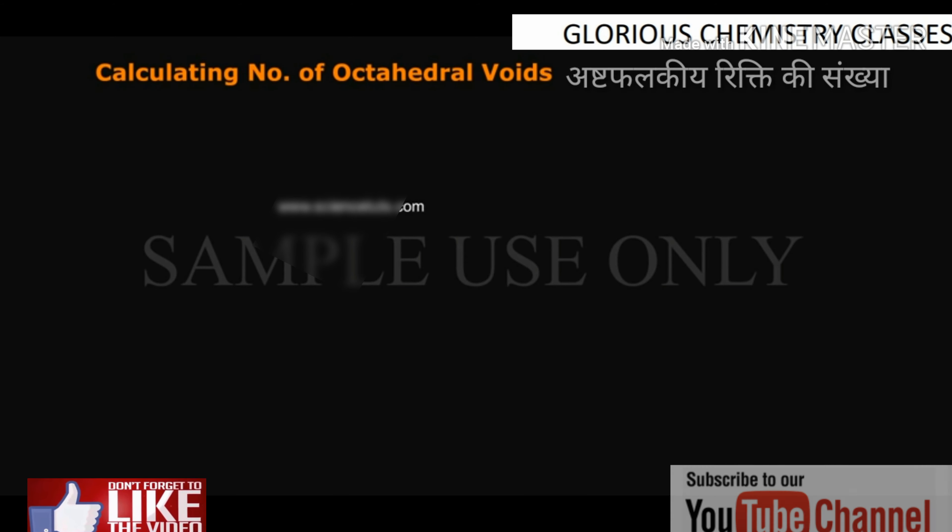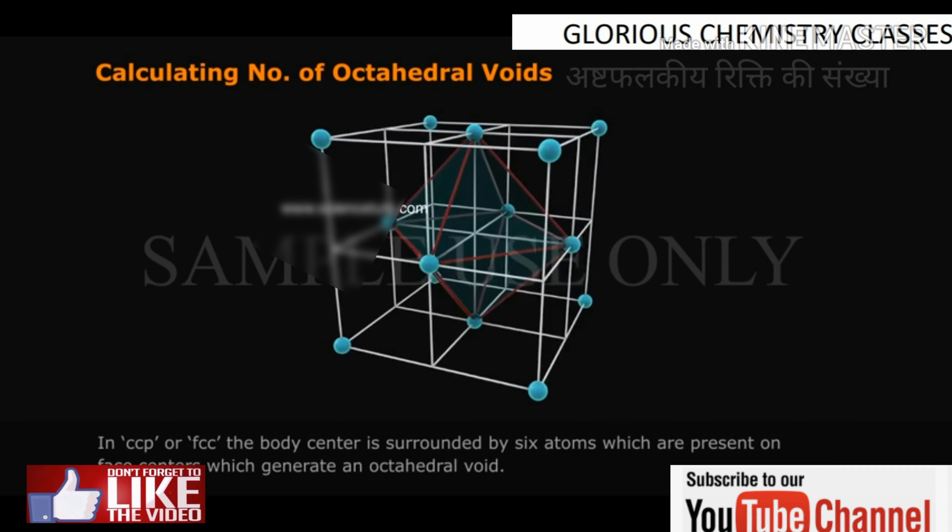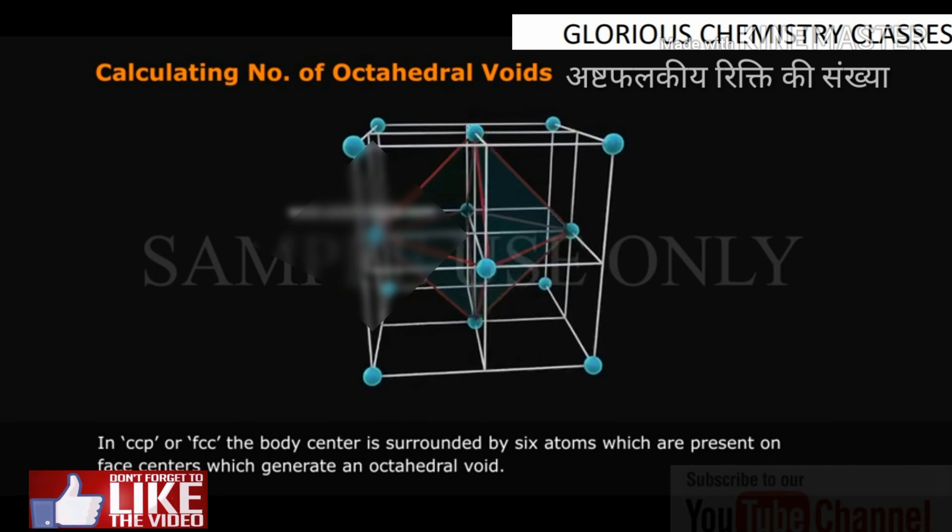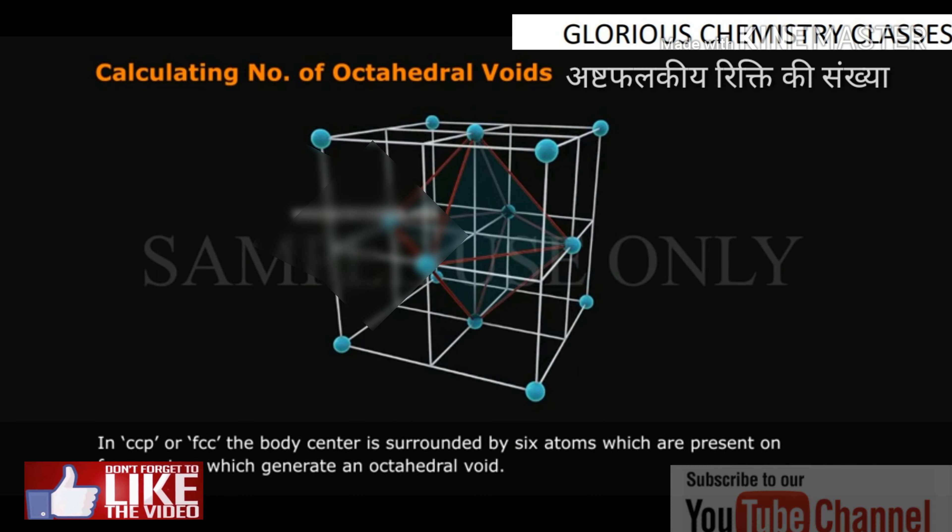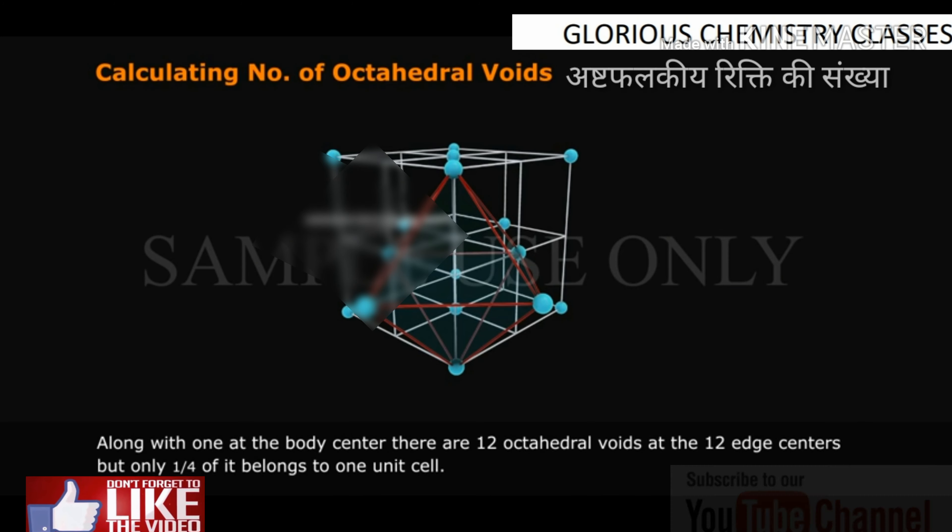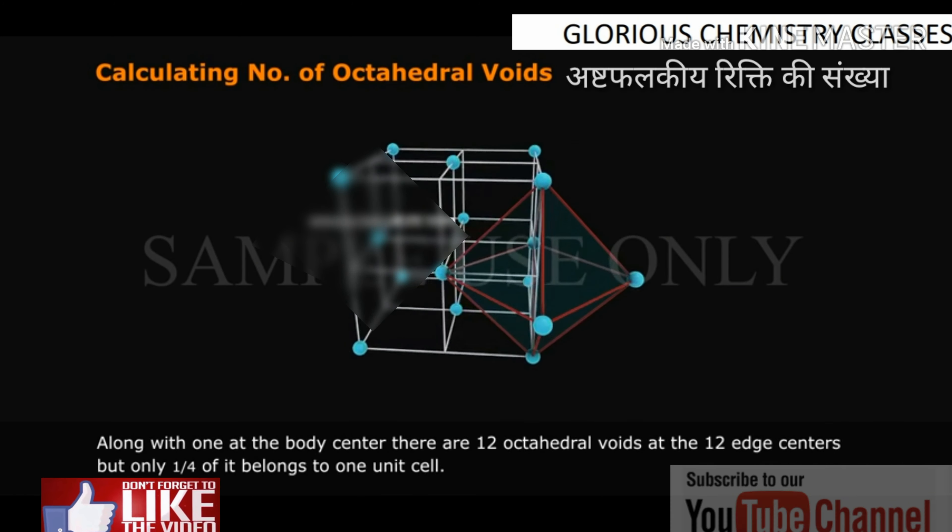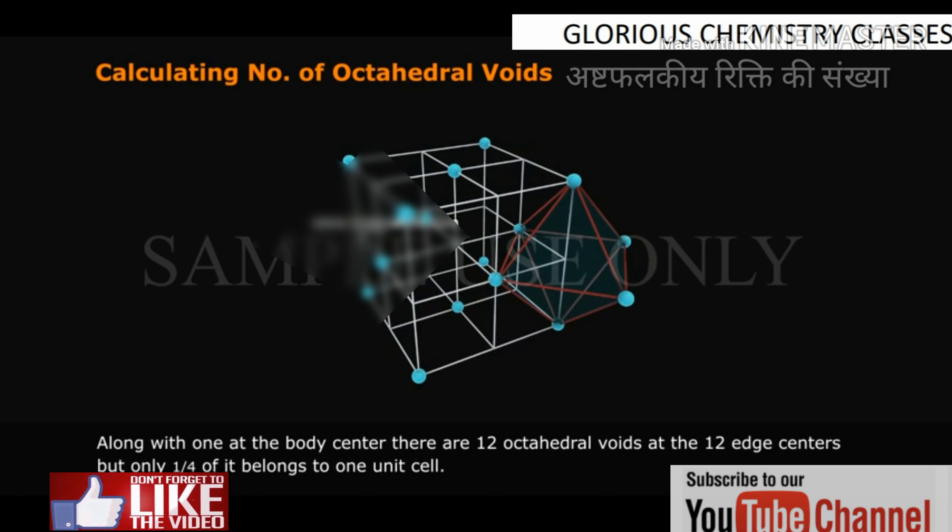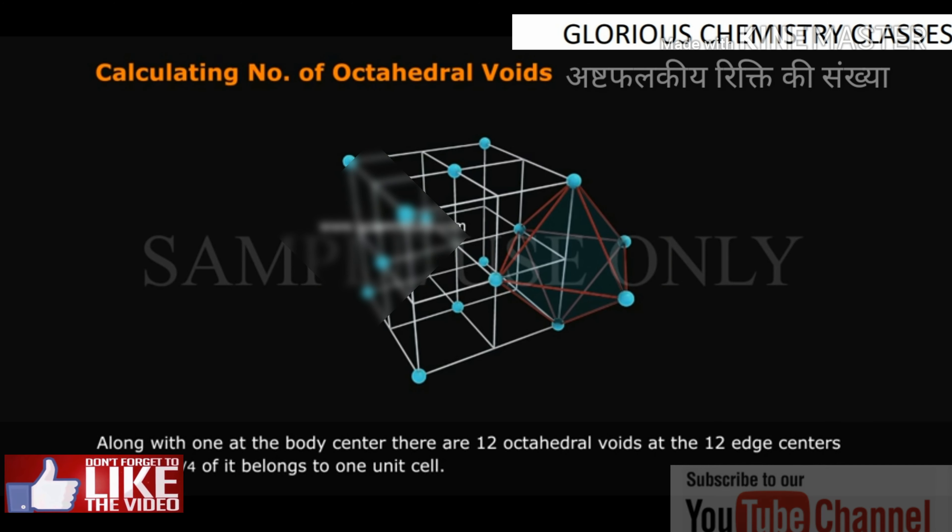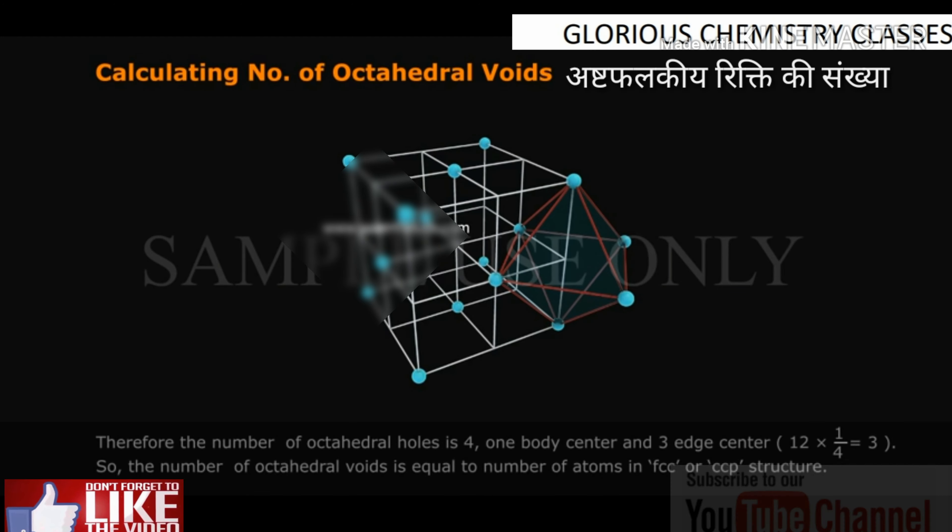Calculating number of octahedral voids: In CCP or FCC, the body center is surrounded by 6 atoms which are present on face centers which generate an octahedral void. Along with 1 at the body center, there are 12 octahedral voids at the 12 edge centers.